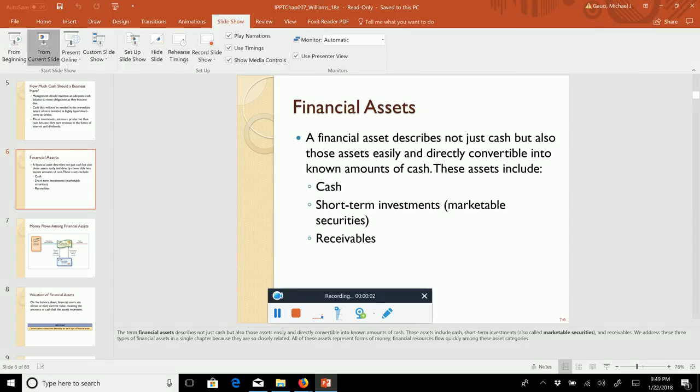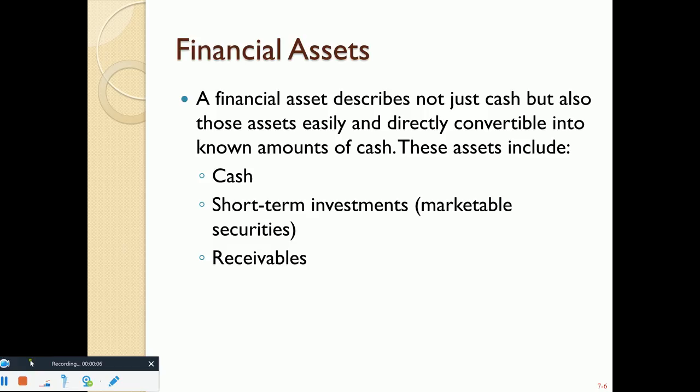In chapter 7, we're going to talk about financial assets. A financial asset is cash, but also those other assets that are easily and directly convertible into cash. We're going to talk about not only cash, but investments—also called marketable securities—as well as receivables. Receivables are amounts due from customers. We provided a good or service and they haven't paid yet, but we expect to collect cash soon.